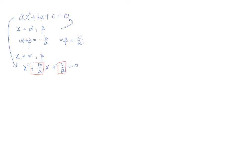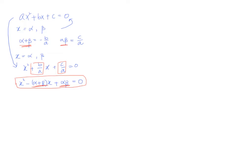I want you to pay attention to the coefficient of X and the constant term here. This coefficient is actually the negative of the sum of roots, which is the negative of alpha plus beta. And of course, C over A is simply the product of roots. So we can rewrite this as X² minus (alpha + beta)X + alpha·beta = 0.